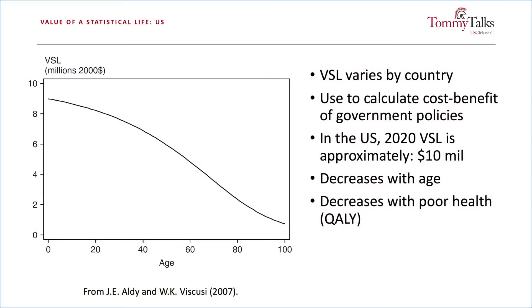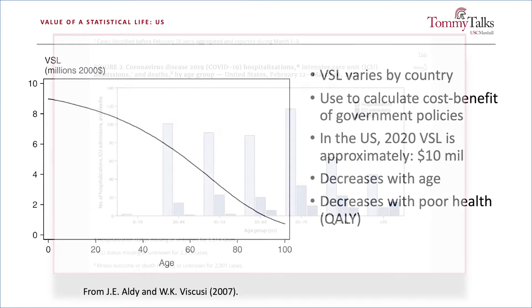While there is no hard and fast figure for VSL in the US, most estimates put the current number at above $10 million per person, with the number decreasing with the person's age.